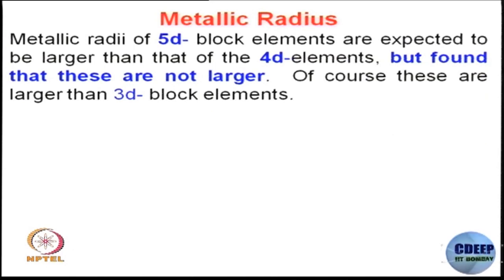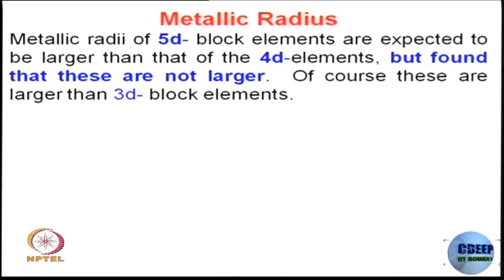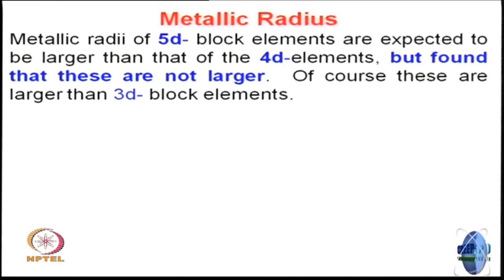The metallic radii of 5D block elements are expected to be larger than those of 4D elements. Going down from 4D to 5D, you would expect a larger size compared to 4D and 3D. But in reality, 5D elements are not larger compared to 4D — which seems to contradict what we just discussed.